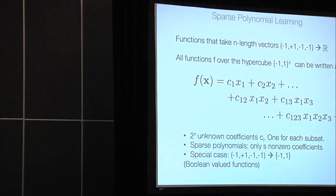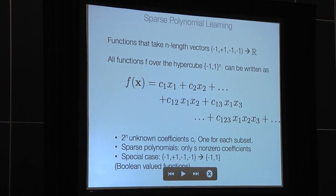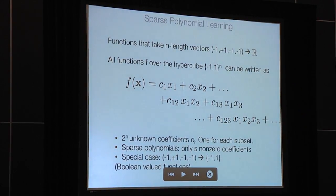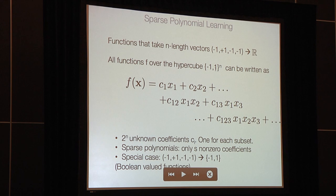The problem we're interested in is learning sparse polynomials. We'll be working with functions that take as input n bits — for example, minus 1, plus 1, minus 1, minus 1 — and produce as output a real number. These are sometimes called functions over the hypercube, from {-1, +1}^n. All of them can be written as linear terms: c1*x1 plus c2*x2, et cetera, plus pairwise terms, plus three-way terms, et cetera.